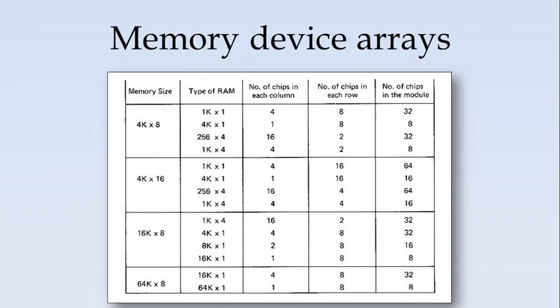If you see the memory device arrays, if you see a memory size of 4K by 8 which indicates 4K locations are there, and each of the location will have 8 bits of memory. This can be achieved using any of these types of RAM. So if it is a 1K by 1, each row will have 8 bits. We will have different rows. Since the module is 1K, we require 4 modules in each column. And each RAM supports only 1 bit. So for getting 8 bits we require 8 chips in a row. So totally how many chips are required in the module is 4 into 8 which is 32.